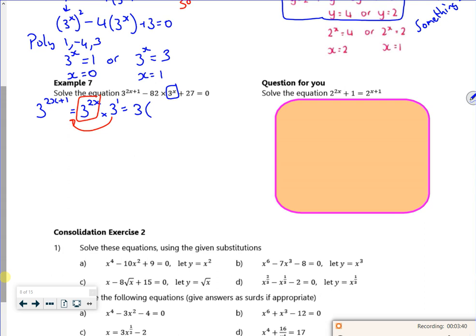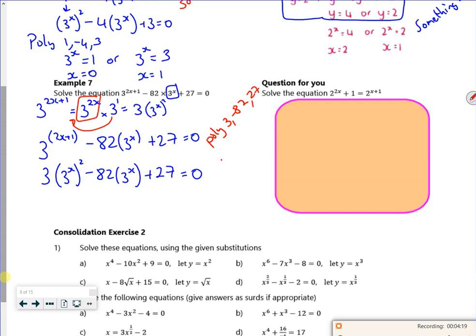That 3^(2x) is the same as 3^x all squared, but it's multiplied by 3. So what I've actually got is 3 lots of 3^x all squared. So my 3^(2x+1) is actually 3 lots of 3^x all squared, and I've got minus 82 lots of 3^x, which stays the same, plus 27. So if I put that into poly, if I put it into poly 3 minus 82, 27, and my something is 3^x, it gives me a 27 and a third.